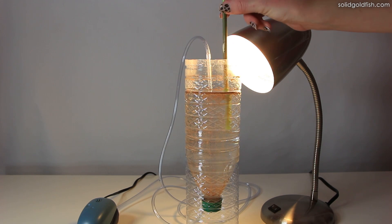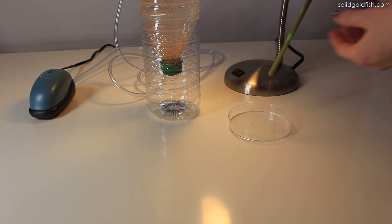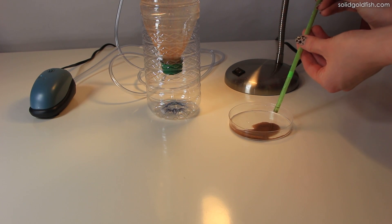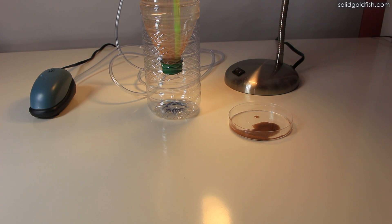Alternatively, you can use a straw by putting your finger over one end and placing the straw all the way to the bottom of the bottle. Then when you release your finger, the straw will take up the water right from the bottom, bringing the hatched brine shrimp along with it. Then just place your finger back over the straw to hold the brine shrimp in place while you transport them.